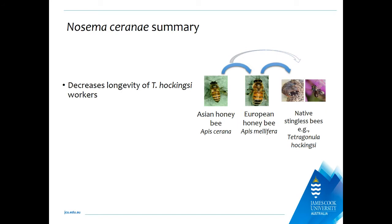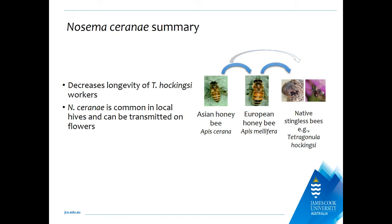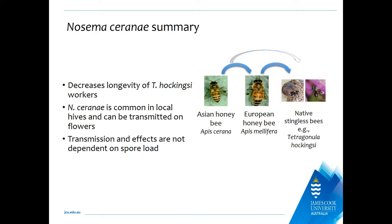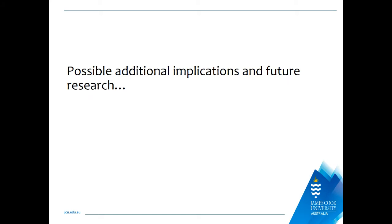To summarise: we found this gut parasite of European and Asian honeybees does decrease the longevity of Tetragonula hockingsi workers. Nosema ceranae was common in local hives and could be transmitted on flowers. Transmission and effects on longevity were not dependent on spore load — which is consistent with what we see in Apis mellifera as well. There is obviously a whole lot more to explore with diseases and pests in native bees.